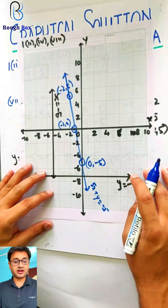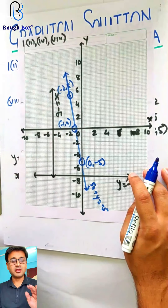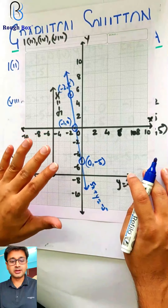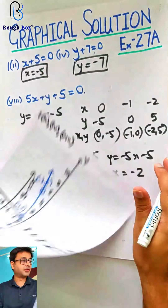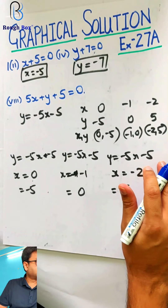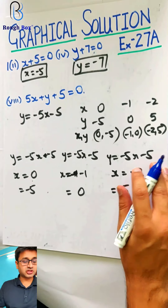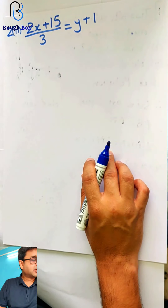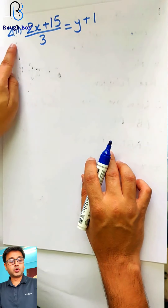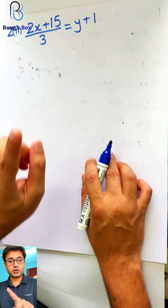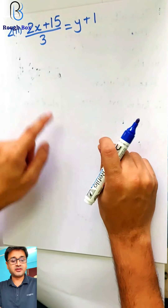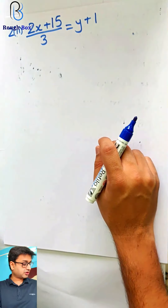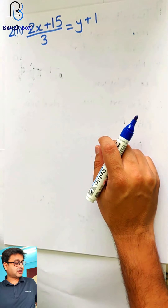We are saving the graph paper. I hope you managed all three — this was very simple, nothing great till now. Let's go ahead with the next one and see how many of you can tackle this. Sum number 2, part 2: first draw this on the graph sheet.